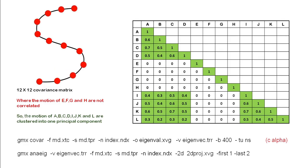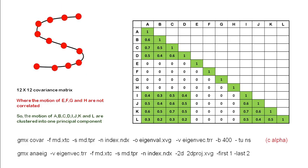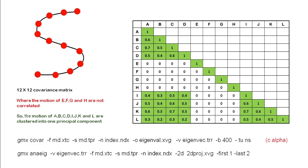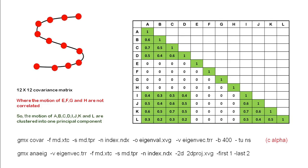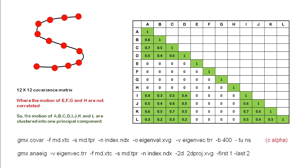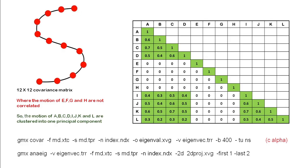In this tutorial I have shown the basic concept of principal component analysis and how to perform PCA using GROMACS. In the next tutorial I will show you practically how to plot the trajectory, plot the projection using xmgrace, generate the free energy landscape, and visualize the conformational change of protein along any principal component. Thank you for watching.